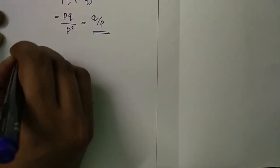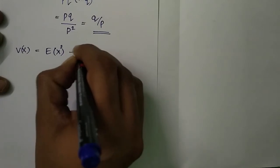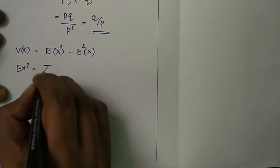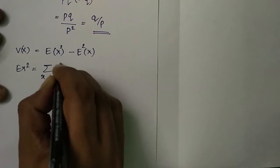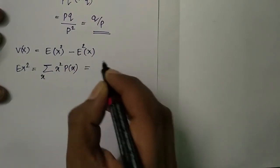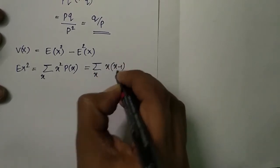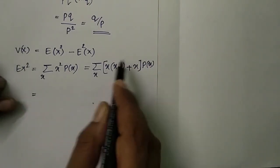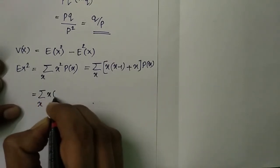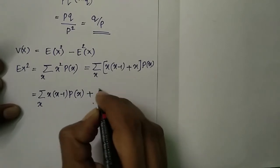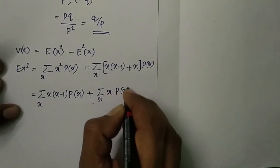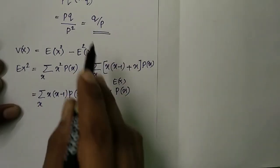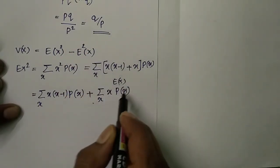Now, the variance of x is defined as E[X²] minus (E[X])², where E[X] = q/p. To find E[X²], we write the summation over x of x² times P(x). We rewrite x² as x(x-1) plus x, so E[X²] becomes the summation of x(x-1)P(x) plus the summation of x·P(x). The second term is simply E[X] = q/p.